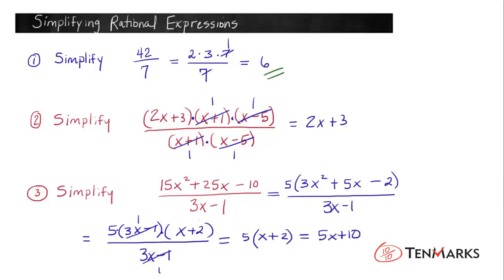Number 1 simplified to 6. Number 2 simplified to 2x plus 3. And number 3 simplified to 5x plus 10. Now you know a bit more about simplifying rational expressions. See you next time!